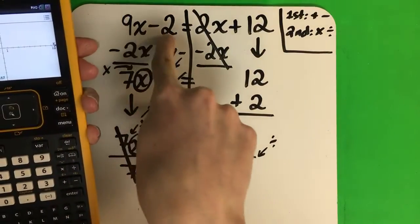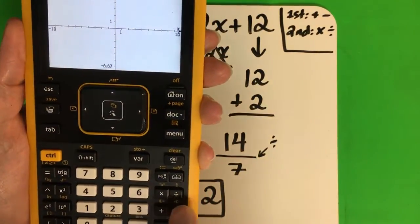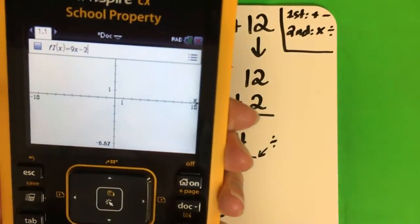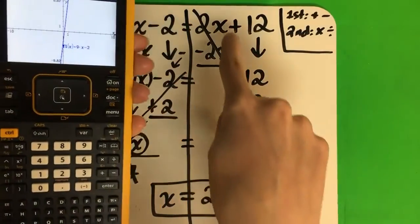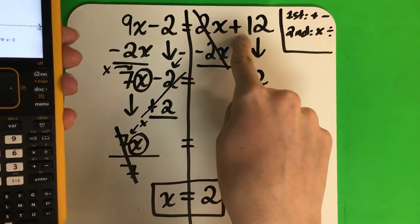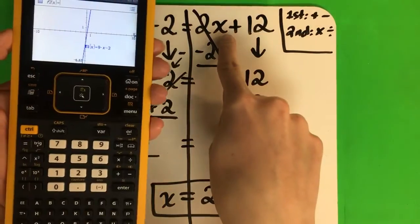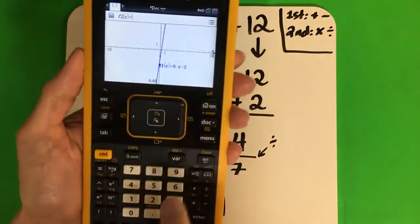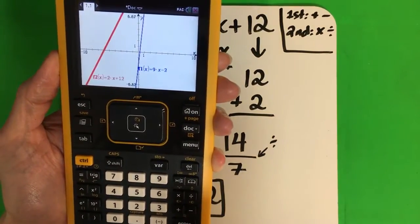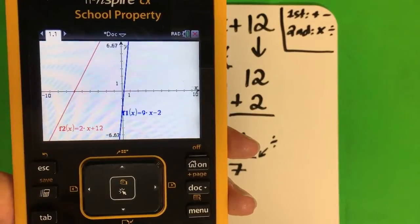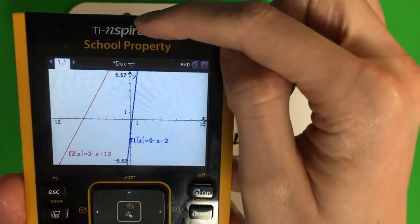The first equation I'm going to put is the left side: 9x minus 2. So 9x minus 2, like this. Enter. Now I need to put another equation — I need to put 2x plus 12. So to do that, you're going to push tab, and you're going to put 2x plus 12. Enter. I have two equations. Now, my answer is where they touch — mi respuesta es donde las líneas tocan.